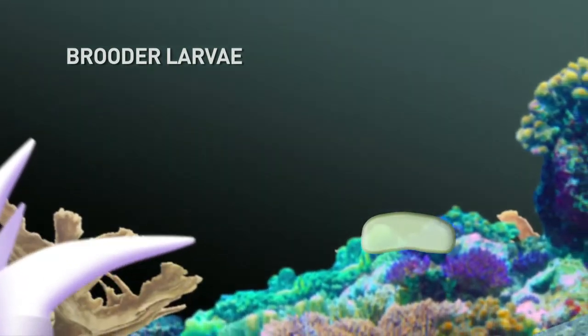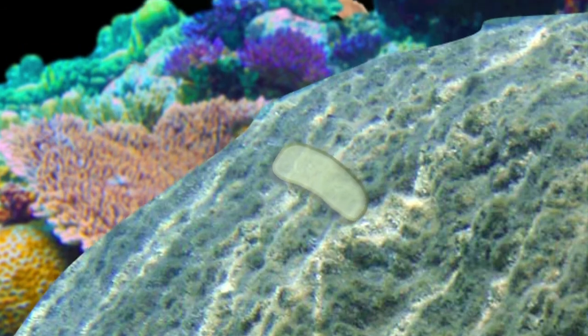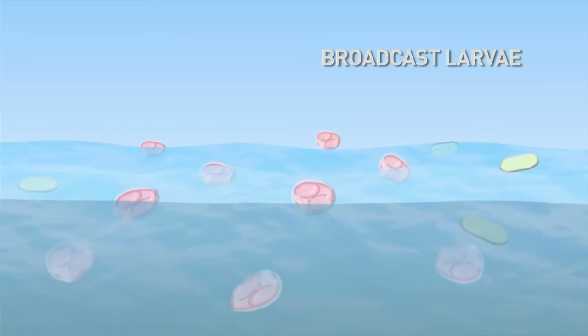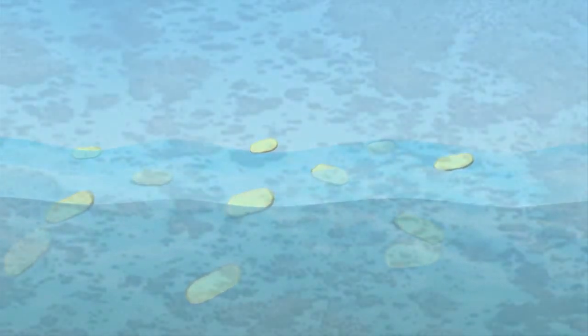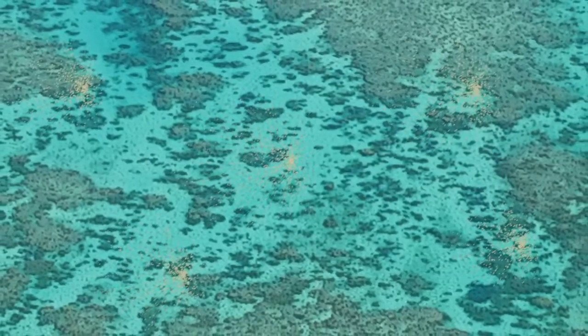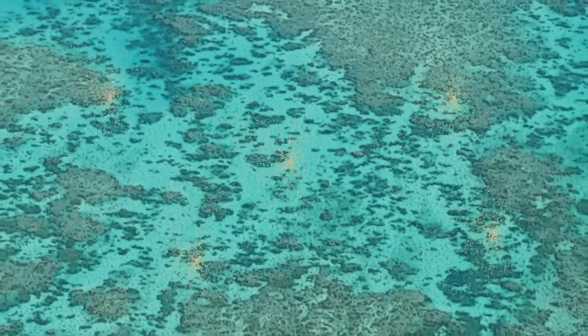Coral larvae are extremely important in terms of the ecology of corals and reef systems. Brooded coral larvae often tend to settle close to their parent colonies, whereas broadcast spawned larvae have a period of at least three to four days developing in the plankton before they are able to settle, and therefore quite often for broadcast spawning species their larvae are dispersed to greater distances across the reef or sometimes to other reef systems nearby. This allows genetic exchange between the coral populations and leads to gene flow between reefs.